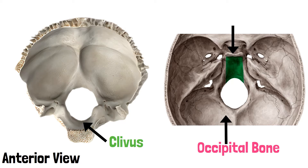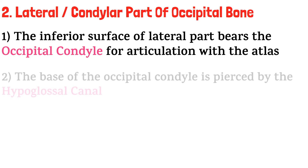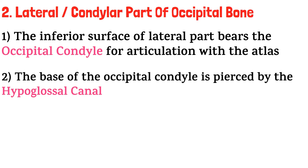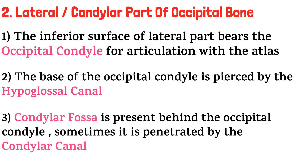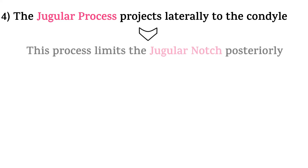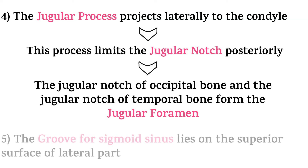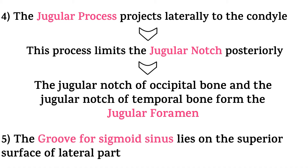With this we complete the basilar part, and move on to the lateral or condylar part. The inferior surface of the lateral part bears the occipital condyle for articulation with the atlas. The base of the occipital condyle is pierced by the hypoglossal canal. The condylar fossa is present behind the occipital condyle, and is sometimes penetrated by the condylar canal. The jugular process projects laterally to the condyle, limiting the jugular notch posteriorly. The jugular notch of the occipital bone and the jugular notch of the temporal bone form the jugular foramen. The groove for the sigmoid sinus lies on the superior surface of the lateral part.